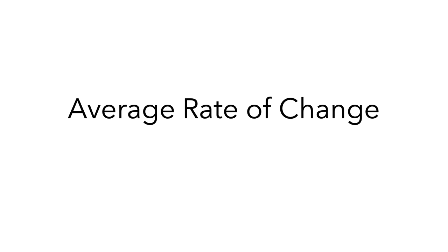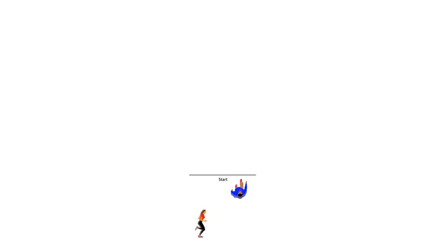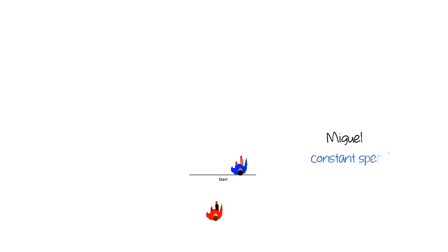In this video, we'll look at a road race to come up with a precise way of thinking about average rate of change. Suppose Alema and Miguel are running laps around a track. Miguel is currently ahead of Alema. When Miguel reaches the start line, their friend starts a timer. Miguel is running at a constant speed. Alema's displacement, d, in meters from the start line, t seconds after their friend starts the timer, is given by the formula d equals 70 times the natural log of t plus 1 minus 58.